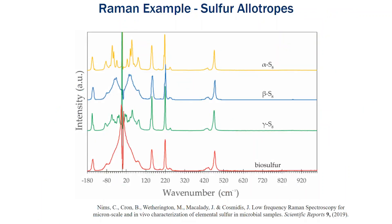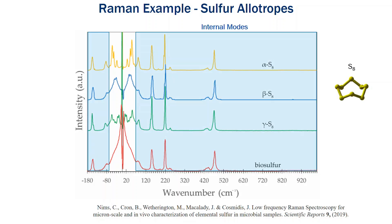What I have shown here are four spectra of cyclooctasulfur, or the S8 molecule, for alpha S8, beta S8, gamma S8, and biosulfur, also known as liquid sulfur. Here is that S8 molecule that's present in all of these samples. The highlighted region shows what we refer to as the internal modes of the Raman spectra — these are the vibrations that are unique to the internal structure of this molecule. The features between these four specimens are more or less the same because it is the same molecule.